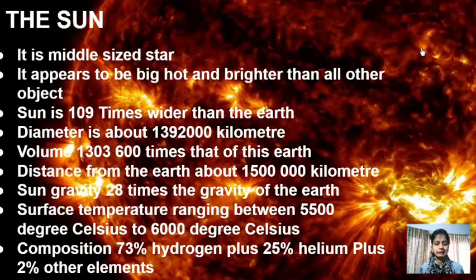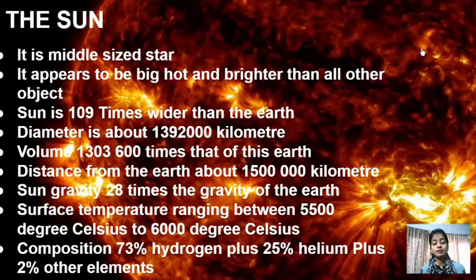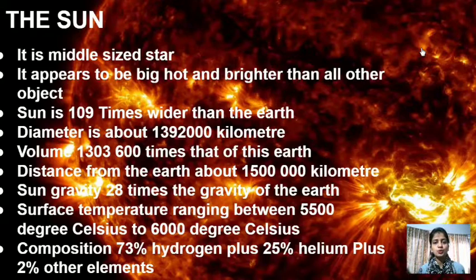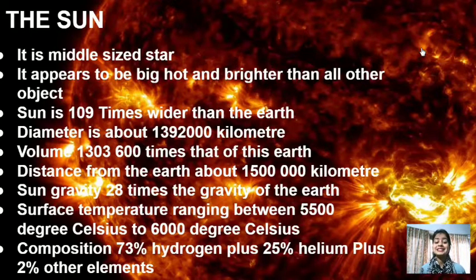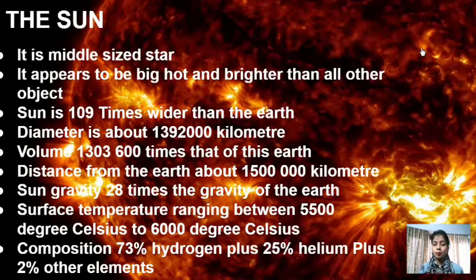The volume of the Sun is 1,303,600 times that of the Earth. The distance from the Earth to the Sun is about 150,000,000 km. Sun's gravity is 28 times the gravity of Earth — if Earth's gravity is 1, then the Sun's gravity is 28.